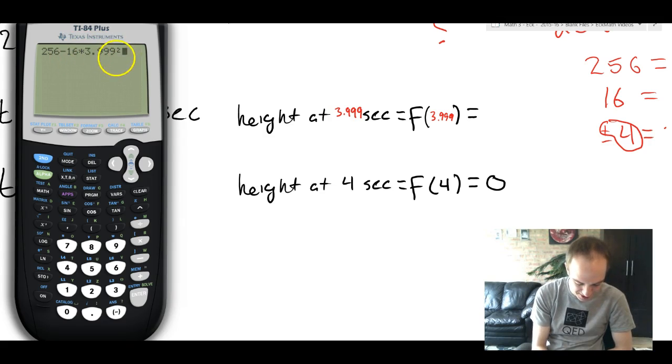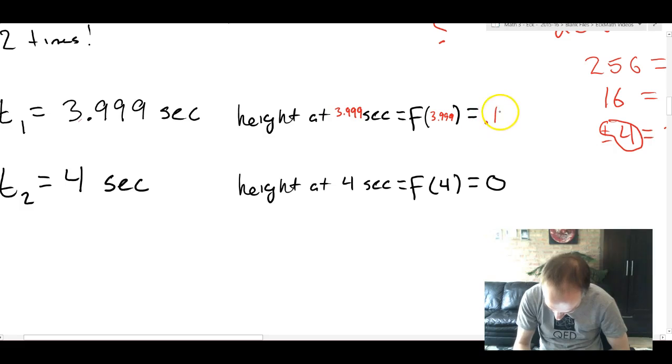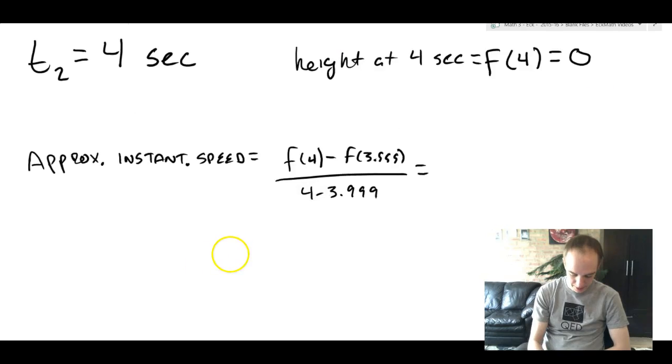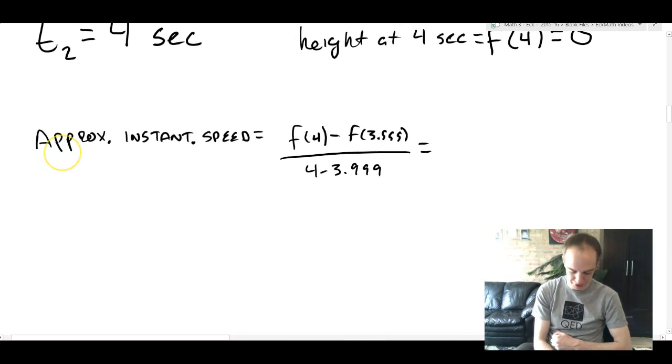One thing to make sure of is that don't include too many parentheses. Don't square the 16. There's no parentheses around that in the original equation. So don't do it. We're going to hit enter. You're going to get a number 0.127984.